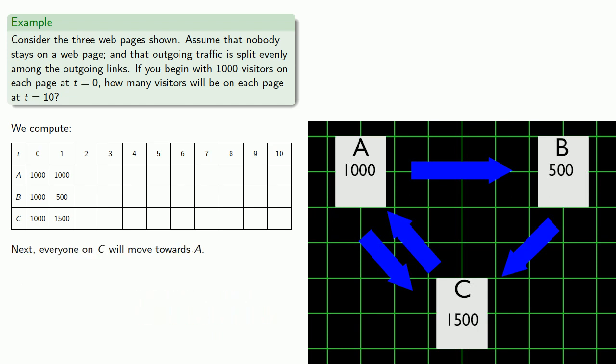Next, everyone on C will move towards A - that's the only outgoing link. Since there are two outgoing links from A, half the people on A will move towards B. And the other half, and all of those on B, will move towards C. And when everyone gets to where they're going, A has 1,500, B has 500, and C has 1,000.